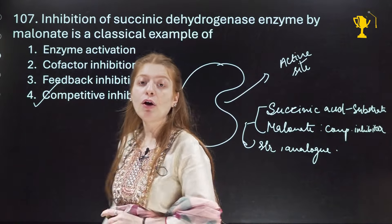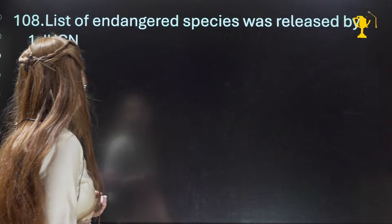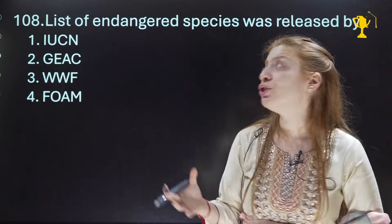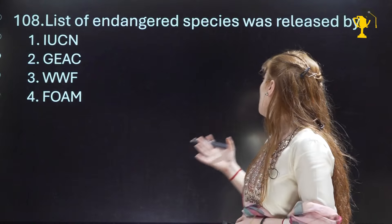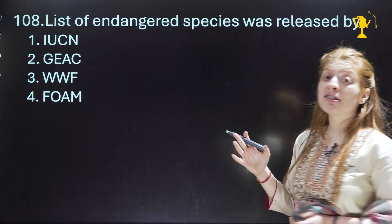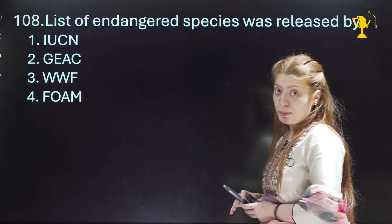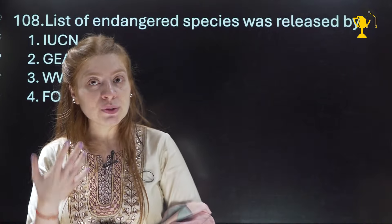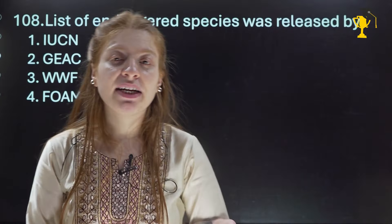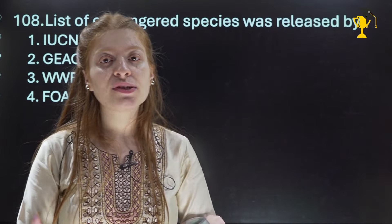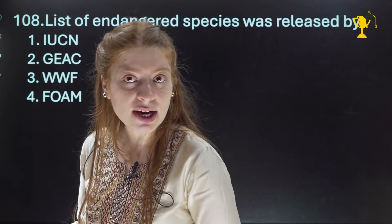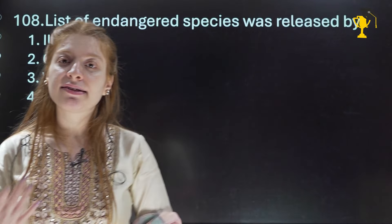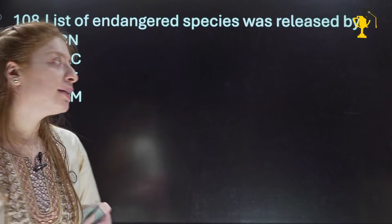Question 108: 'The list of endangered species was released by?' All endangered species lists are released by IUCN. The IUCN Red List identifies threatened and endangered species. So the direct answer is IUCN. The question is from the Ecology chapter.